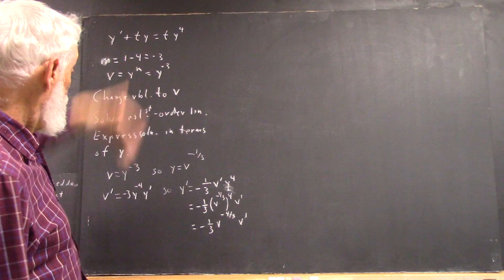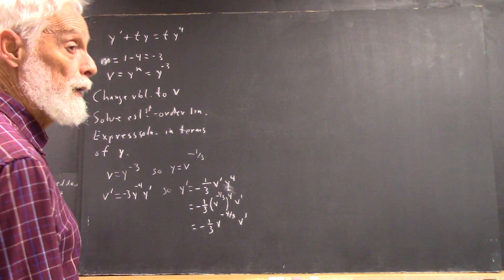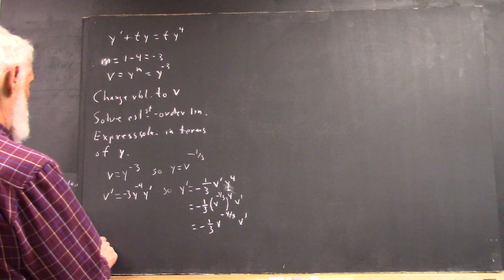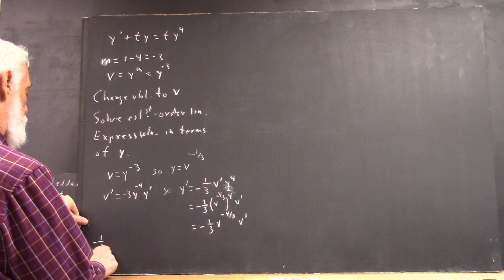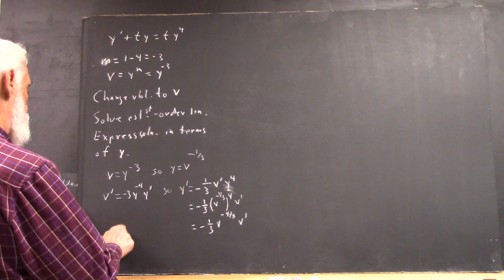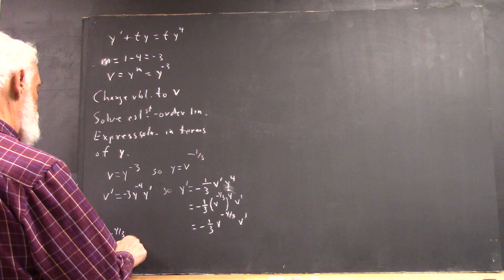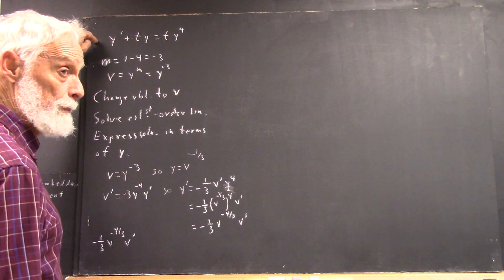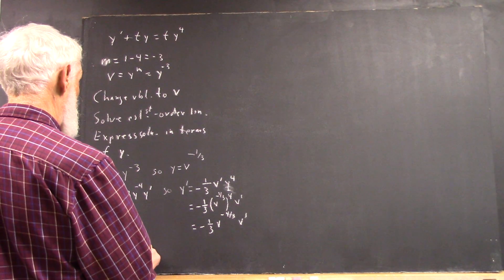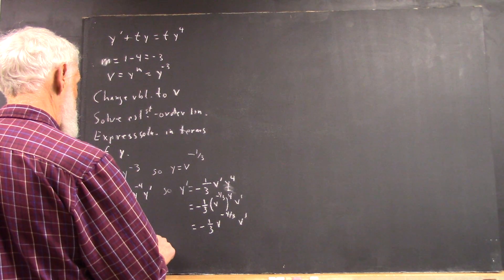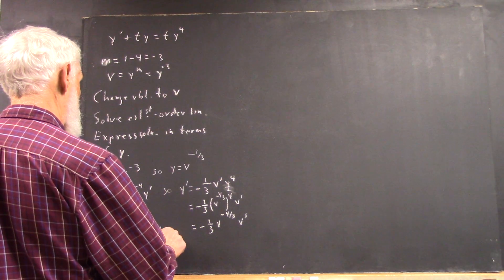And now we simply rewrite the equation. We have y prime, so we have negative one-third v to the negative four-thirds times v prime. That's our y prime. That's going to be plus t y. Well, that's t v to the negative one-third.